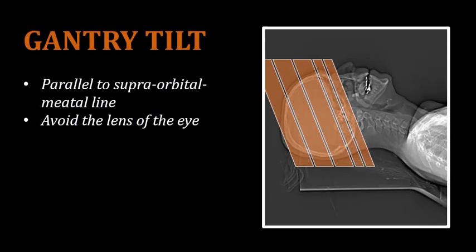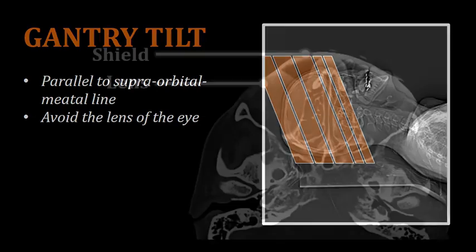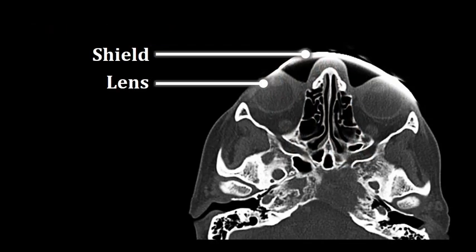Other things need to be considered when completing a routine CT head, for example the gantry tilt. Not all CT procedures require that the gantry be tilted. But in this case, the gantry should be tilted so that the slices are aligned parallel to the supraorbital meatal line, and the specific purpose of this is to avoid the lens of the eye. In this image, the technologist did not angle correctly.